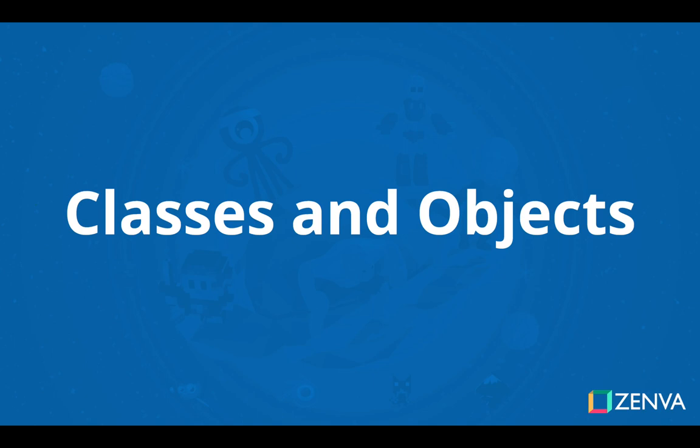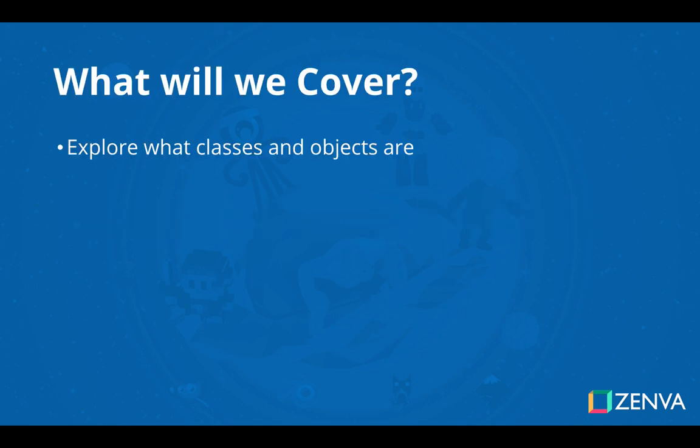Welcome to the final tutorial in our Java course. This is going to be all about classes and objects. We're going to get an intro into what classes and objects are, how they relate to each other, and how to use them. We'll start by exploring what they are, then we'll create a custom class, and then we'll create an object of that class and learn how to use it. Let's head to the code and get started.